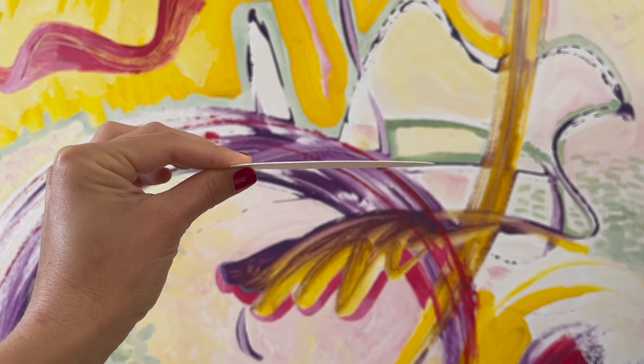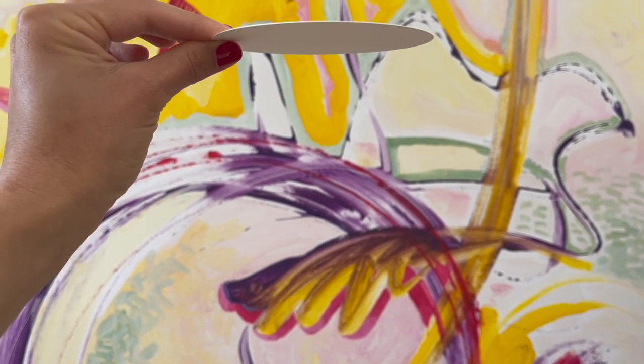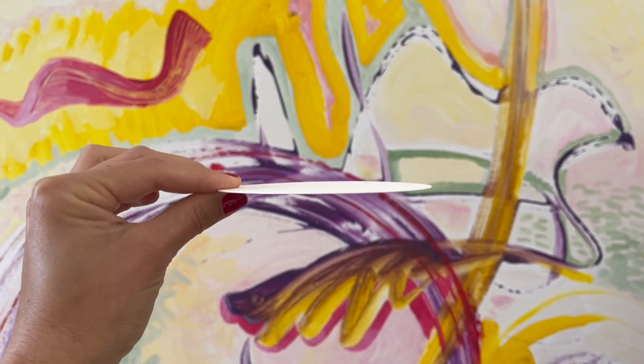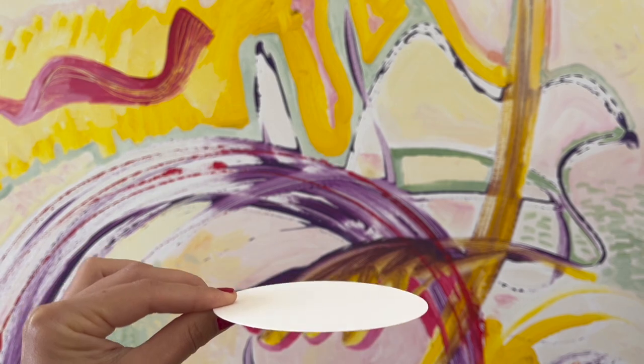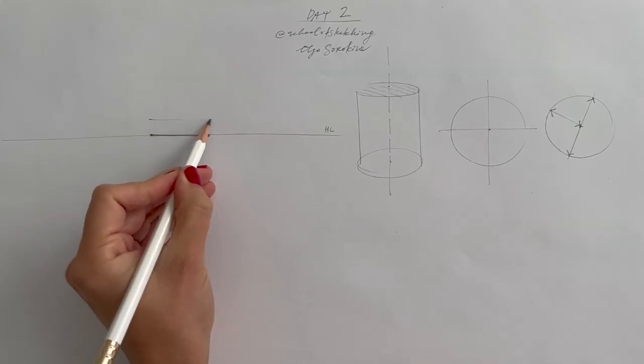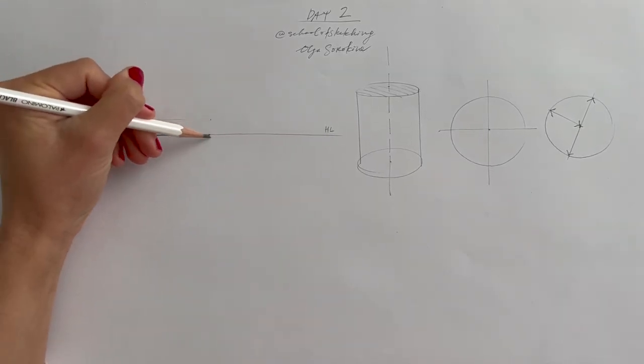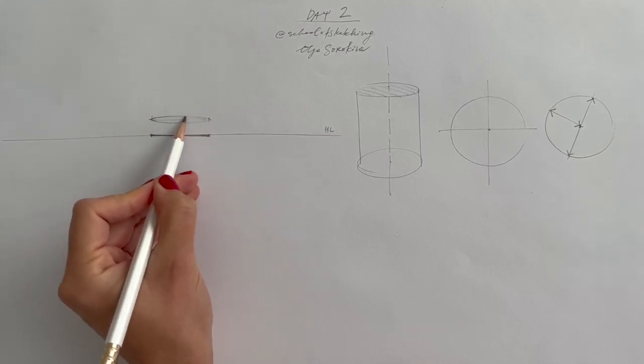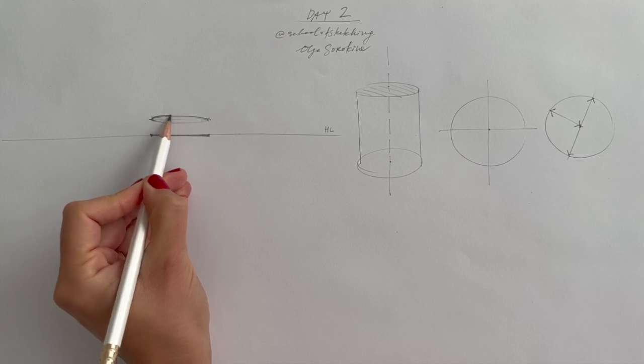If I move it up, we can see the opening of the ellipse. If I move it down, we also can see the opening. Now, as they say, back to the drawing board. I hope with this quick demonstration, this concept of the circle in perspective becomes a bit easier.